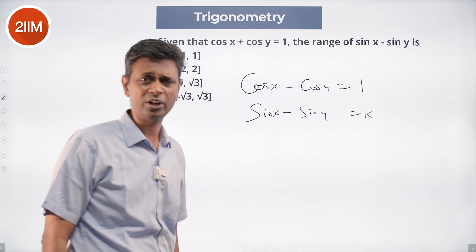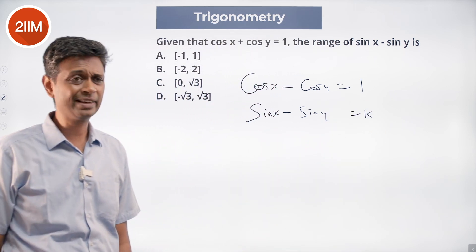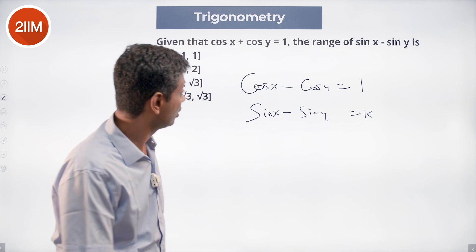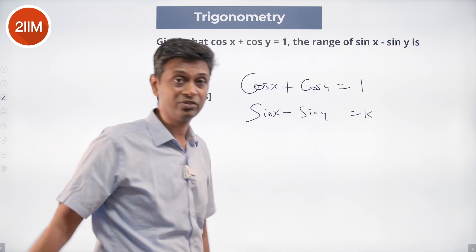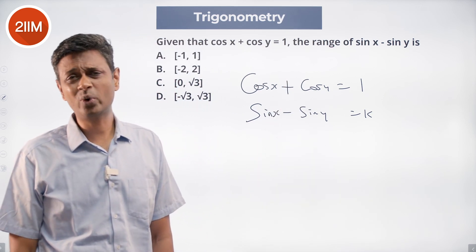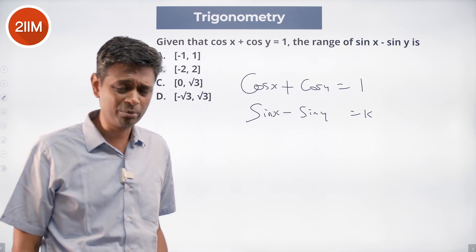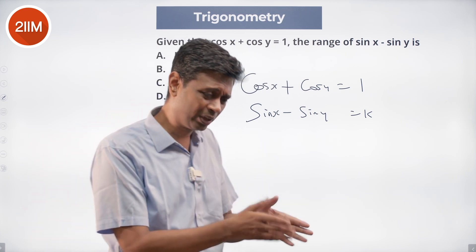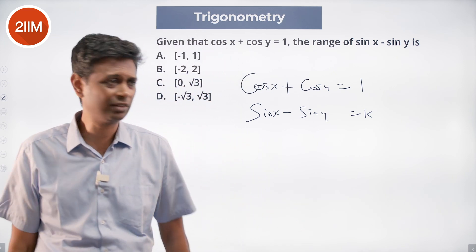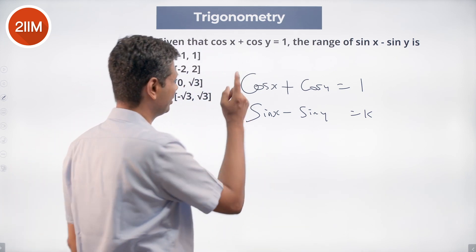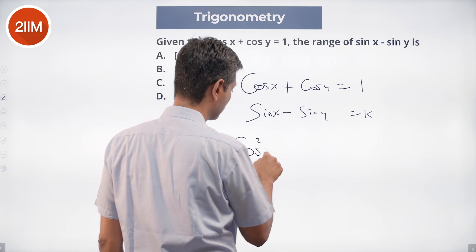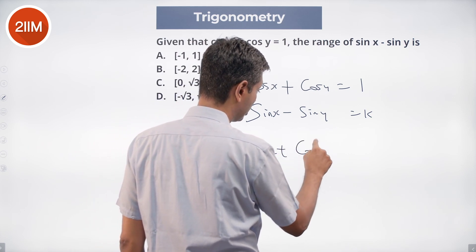We'll think about what range of values k can take. I have cos x and cos y, I have sine x and sine y. What do I do? I square them — because I love cos² x plus sine² x, that totally simplifies life. So we square: cos² x plus cos² y...